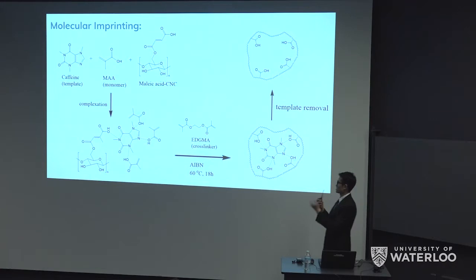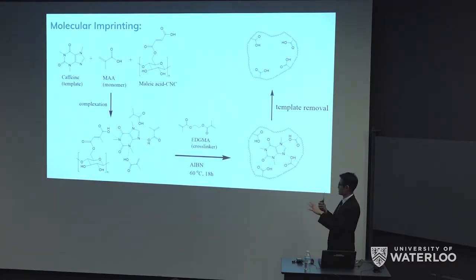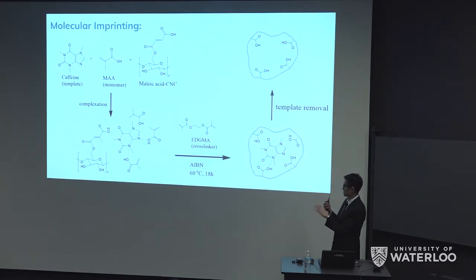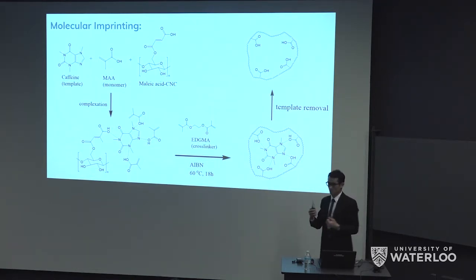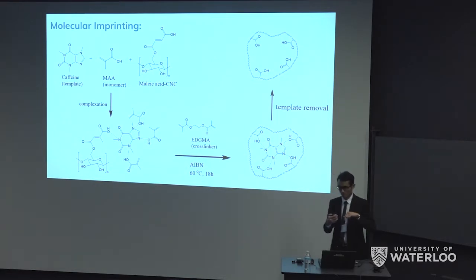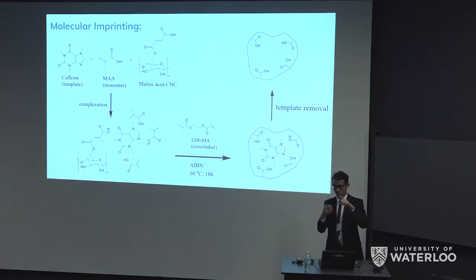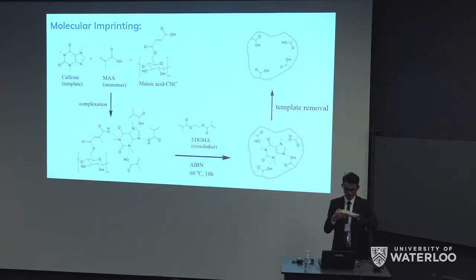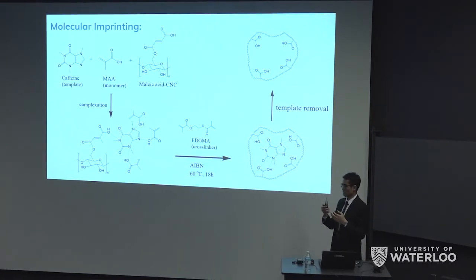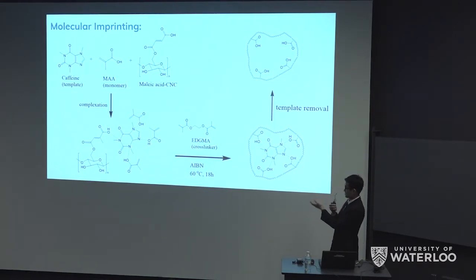First we mix the caffeine template and the methacrylic acid monomer, and they will form a stable complex by hydrogen bonding. After that, we add a cross-linker EDGMA and initialize the polymerization using AIBN. The methacrylic acid will start polymerizing on the surface of the cellulose nanocrystals, forming a brush-like structure. The cross-linker EDGMA will form bridges across the different chains, forming a polymer resin which will encapsulate the caffeine template molecules.